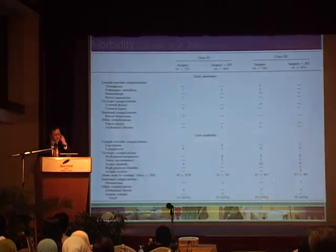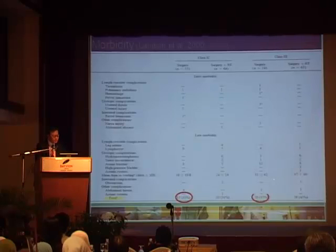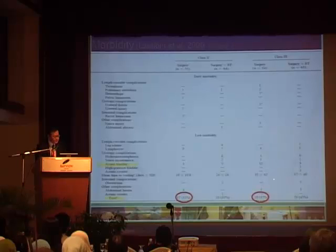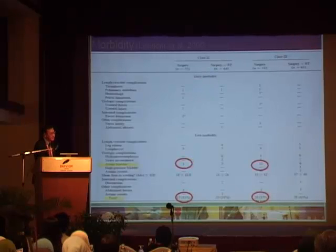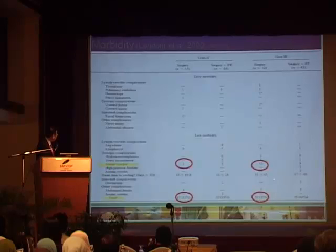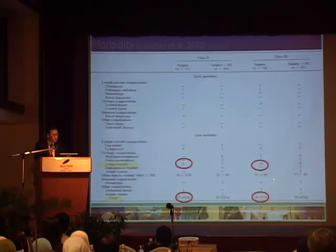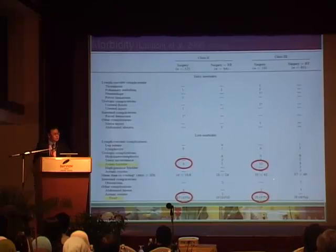From the paper by McDonnell published in 2000, in a series of 243 patients, the total complication rate between class 2 and class 3 is almost similar. But if you look at the neurological complications, there is a higher rate of atonic bladder in class 3 radical hysterectomy versus class 2 — amounting to about 22% in class 3, and about 6% in class 2. And the mean duration of time to resume normal bladder function is almost twice as long in class 3 compared to class 2 radical hysterectomy.